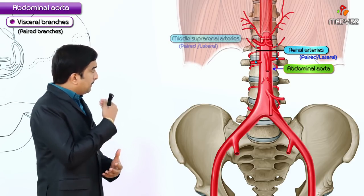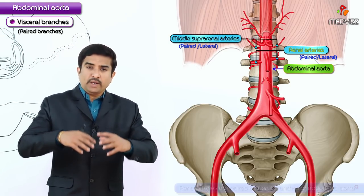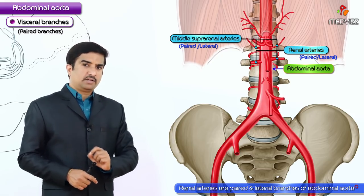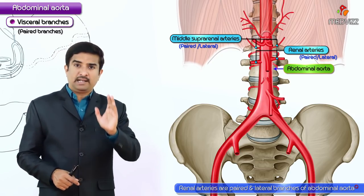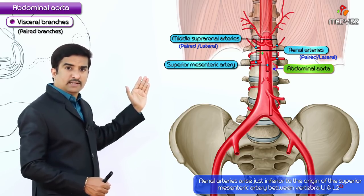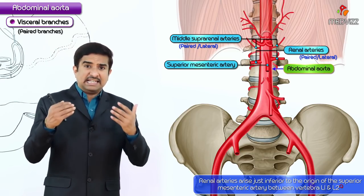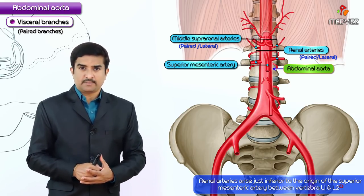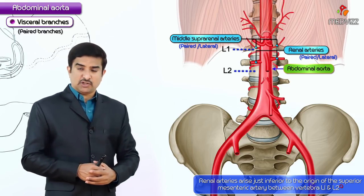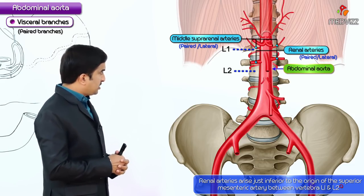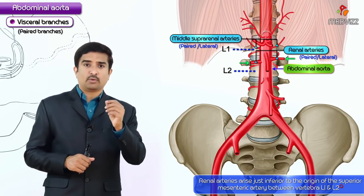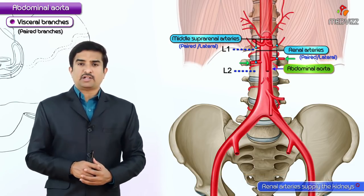Another paired branch is the renal arteries. These are lateral branches of the abdominal aorta, arising just inferior to the origin of the superior mesenteric artery, between vertebrae L1 and L2. As seen in the image, the left renal artery is at a higher level compared to the right renal artery.